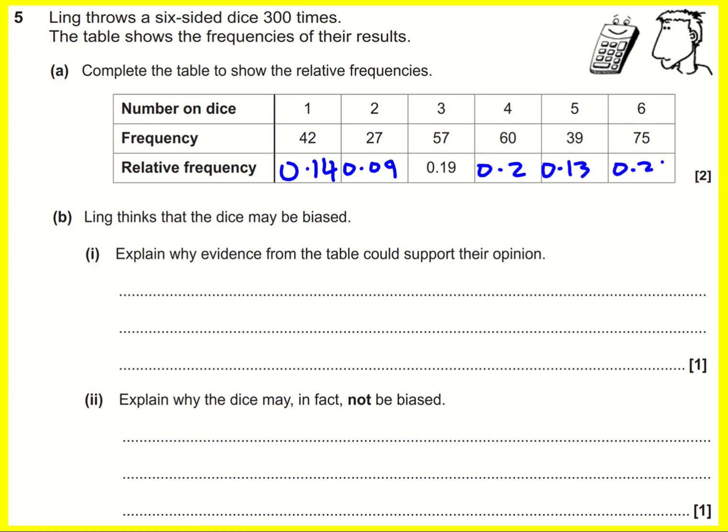Those would add up to give one, because the relative frequencies of all outcomes sum to one. It's a bit like a probability, but it comes from experiment, so we can't call it the probability — that's a theoretical concept. This is the experimental version of that.